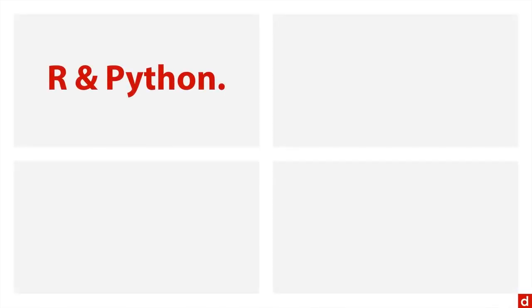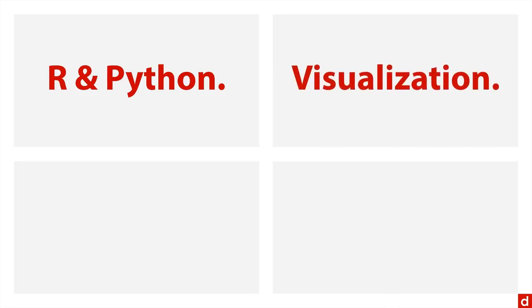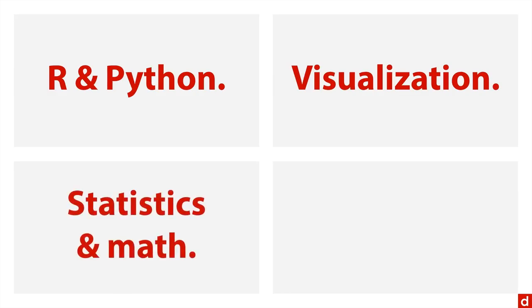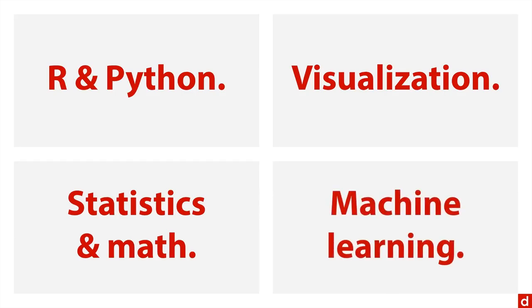Number one, maybe you want to start trying to do some coding in R or Python — we have courses for those. You might want to try doing some data visualization, one of the most important things that you can do. You may want to brush up on statistics and maybe some math that goes along with it, and you may want to try your hand at machine learning. All of these will get you up and rolling in the practice of data science.